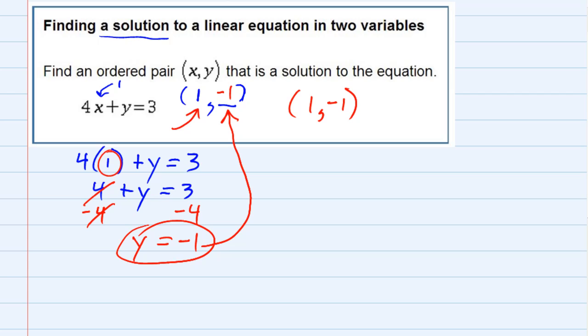If we would have chosen a different value for x, for example, if I would have chosen x = 0, I would have plugged in the 0 for the x, and had 4(0) + y = 3.